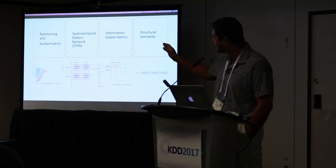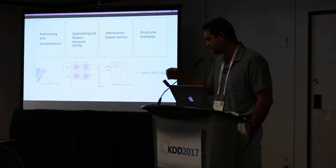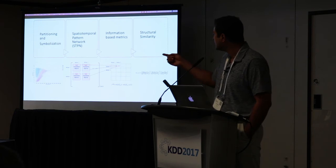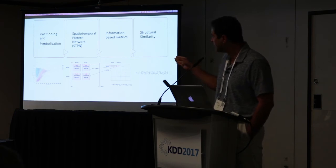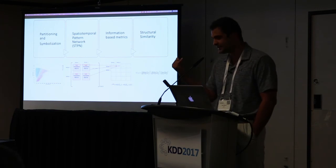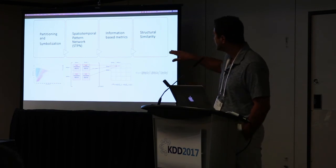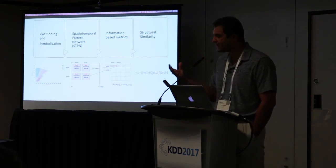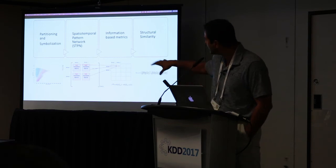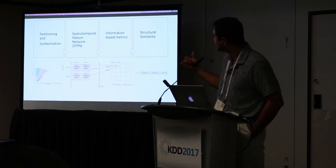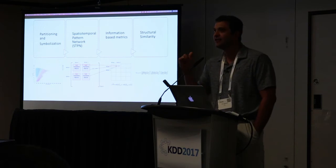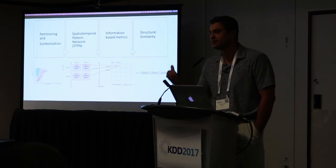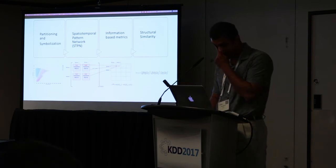The steps are: we partition and symbolize our continuous dataset into characters and states, then find the STPN models showing how states correlate in transition matrices, convert those into information matrices, combine all transition matrices into an information-based metric, and find the differences in information matrices between days to determine if a specific day stands out.